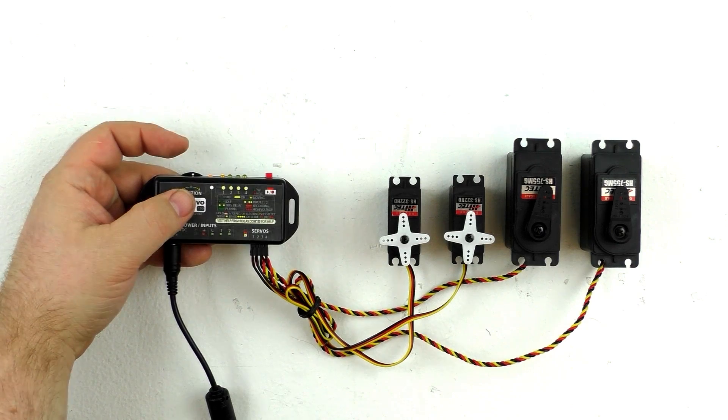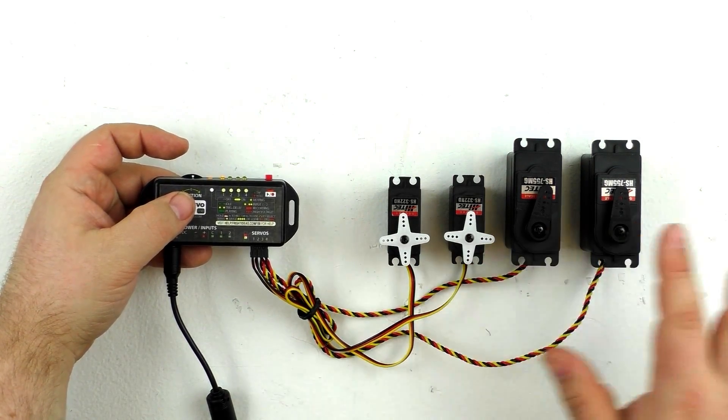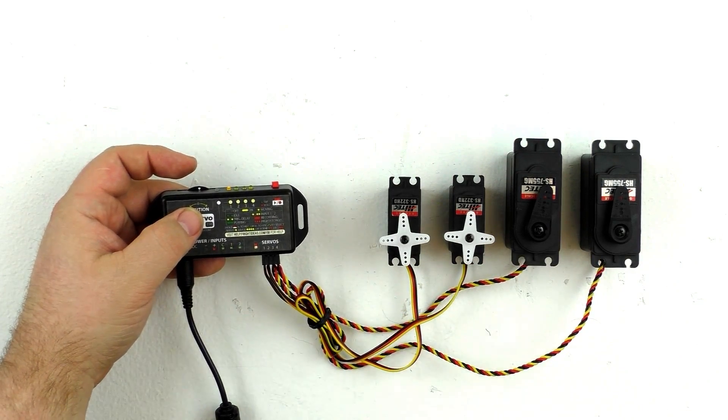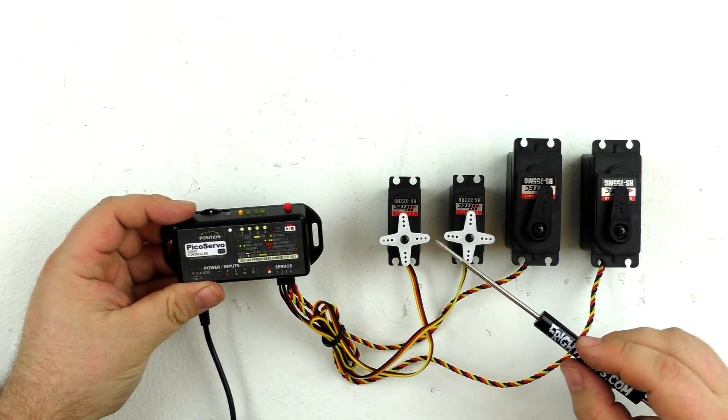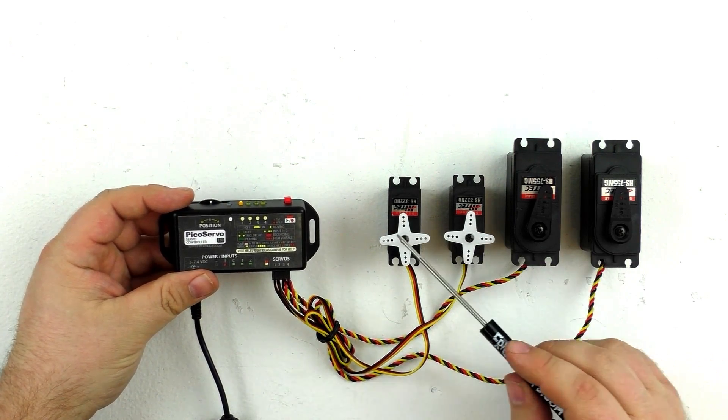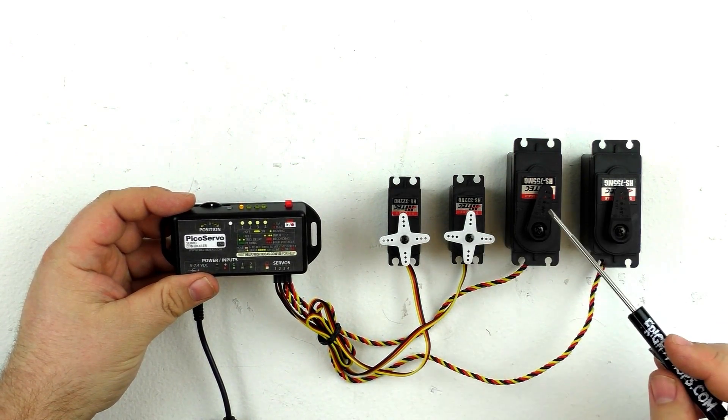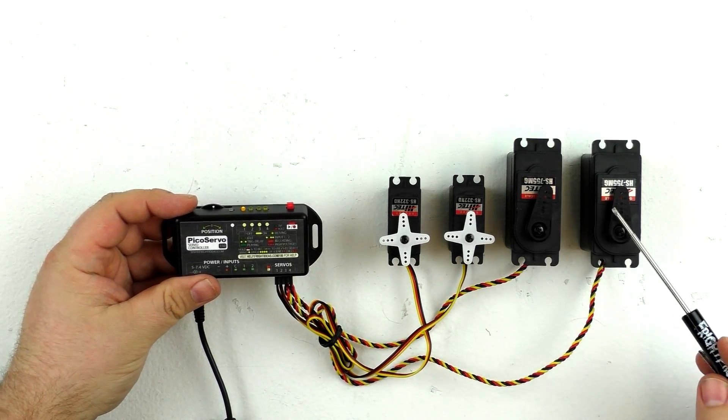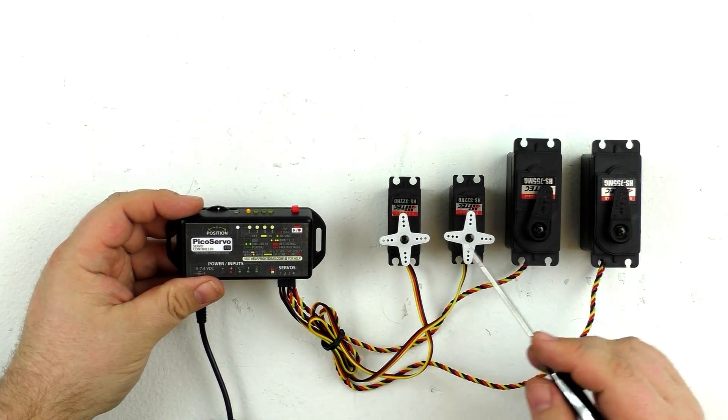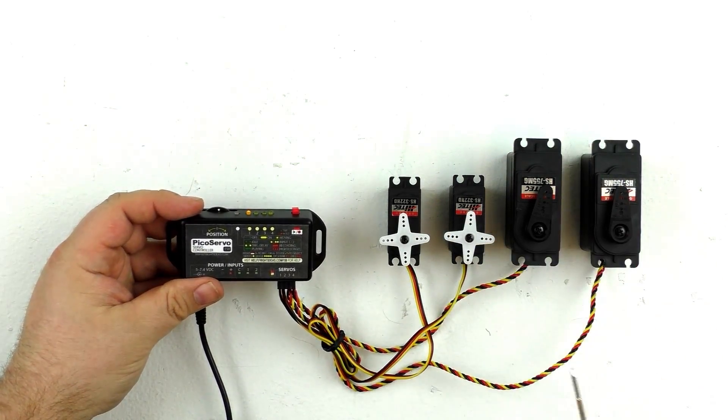All right, and that is that servo setup. I've already done the other three servos here, so we can go ahead and start actually programming the servos. We have two different styles of servos here. We have our standard servos, and we also have our quarter scale or large servos. They program exactly the same. The only difference is the size and the amount of torque that they can exert.